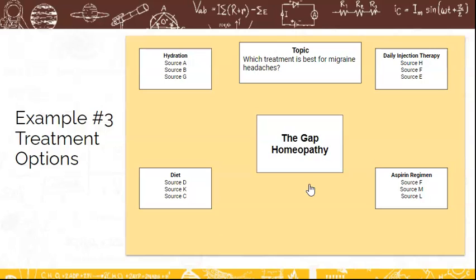There are many other options in terms of treatments for migraine headaches, but perhaps one gap might be homeopathy. That's just something that has not yet been addressed by the sources that I pulled together. As a student researcher, I'm communicating about the sources I brought together and how they have not addressed homeopathy. I'm trying to justify that I'm making the choice of homeopathy because based on my thorough investigation, that's an identifiable gap.